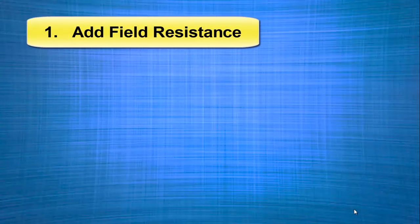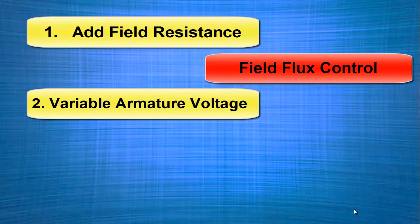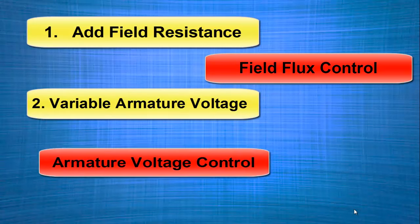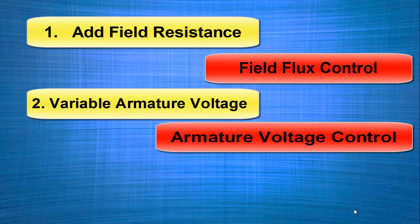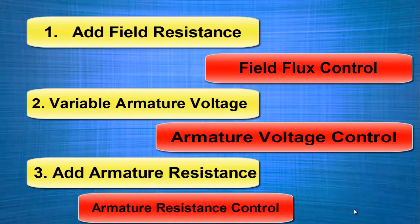The first method is by adding resistance in series with the field winding. This method is called field flux control. The second method is variation of armature voltage using PWM or Ward-Leonard method — this is called armature voltage control. The last method is adding resistance in series with the armature circuit, called armature resistance control.